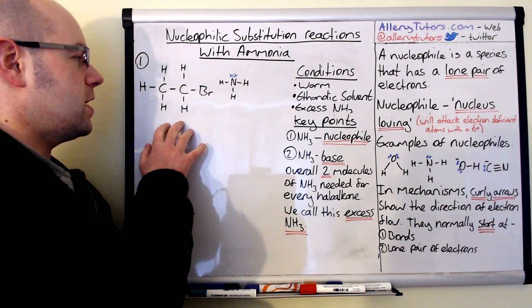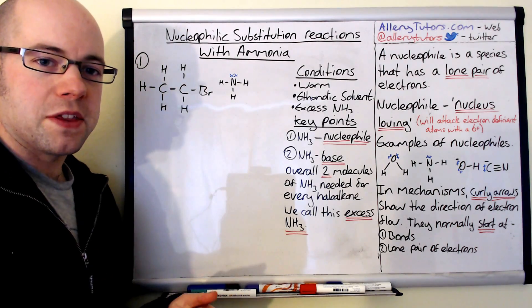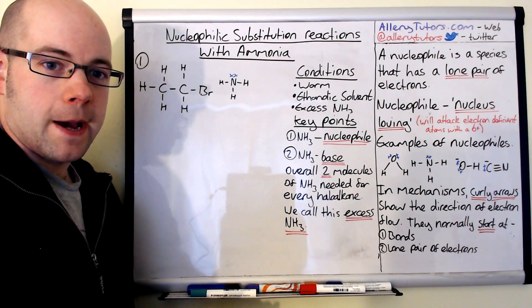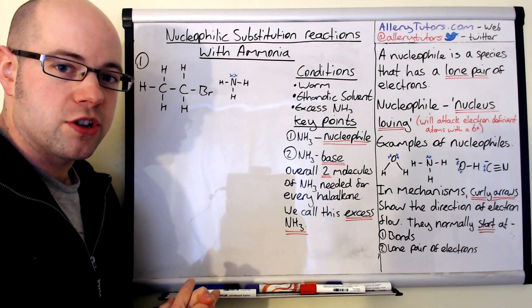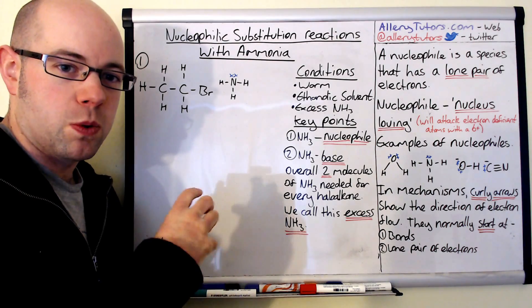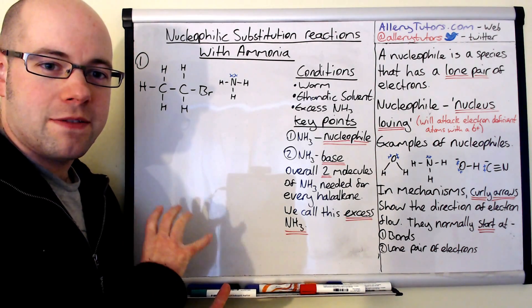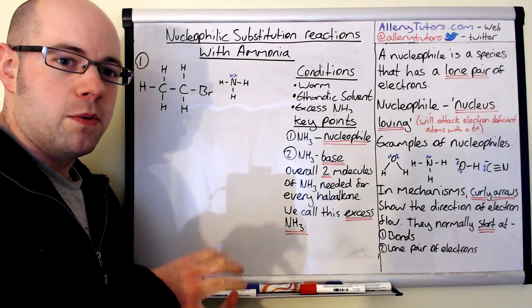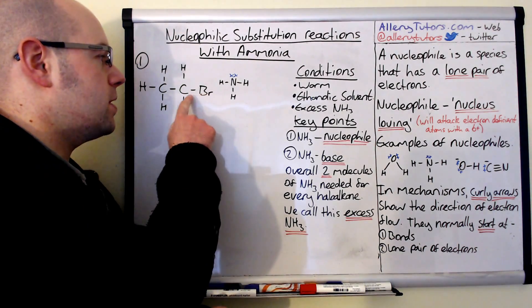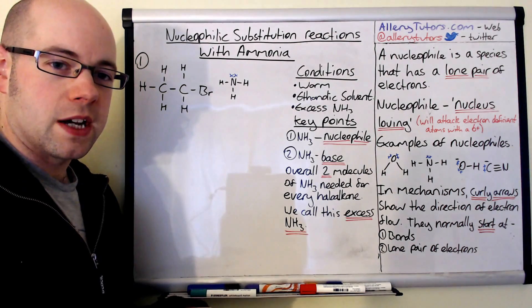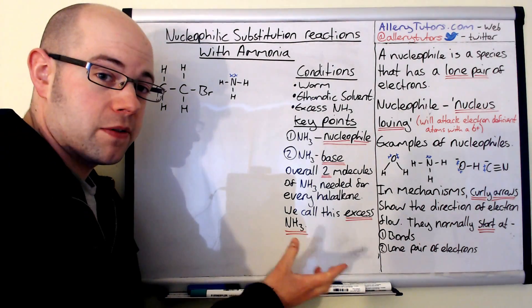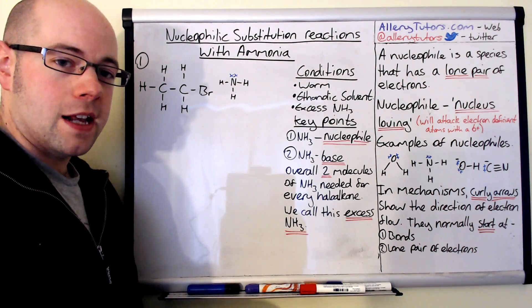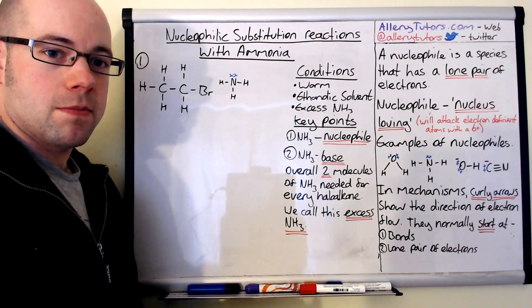Okay so we're going to start with this. Now this is bromoethane so it's a haloalkane and we've got our nucleophile here which is ammonia and we're going to do a substitution reaction on it. The substitution means we're going to swap one molecule with another. This one's a little bit different because we've got an extra step. It's a two-step process. I'm going to show you both and explain what role ammonia is playing in both of them. So we're going to start with drawing our delta positive and delta negative on here. You actually get a mark for this in the exam.